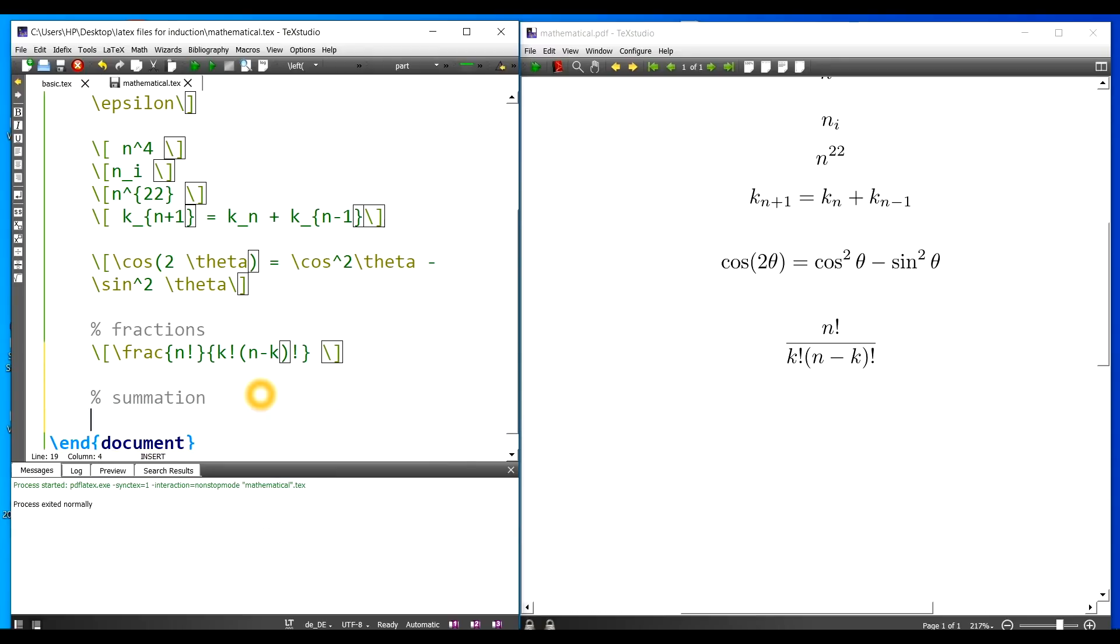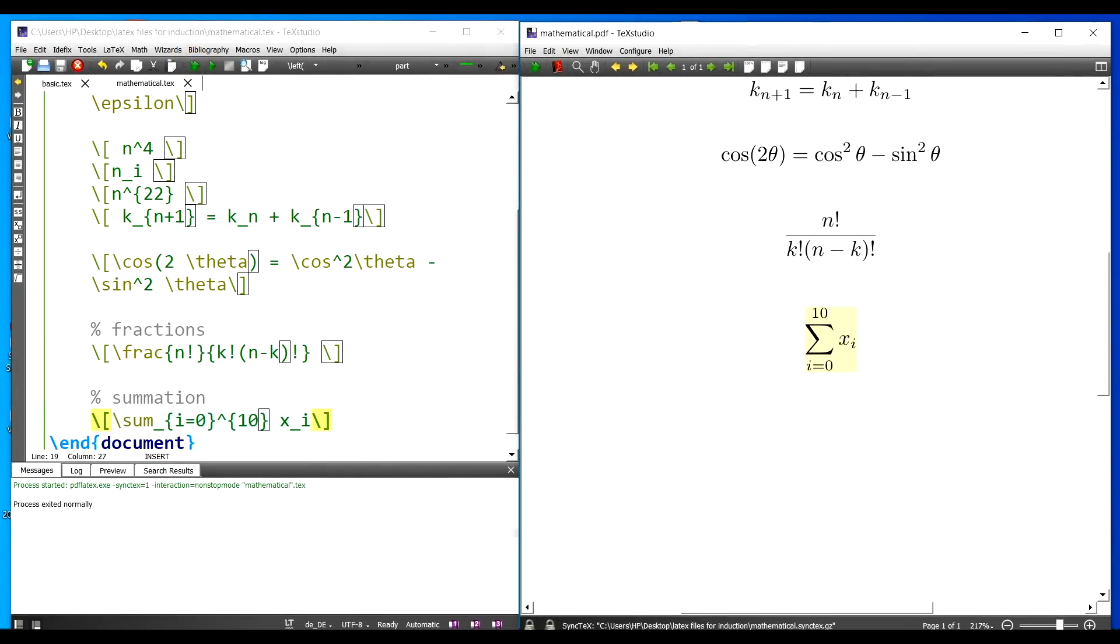Let me take summation. In case of summation our command is slash sum. Summation has the limits. Let me say sum from underscore i, i is equal to 0 to 2, so that is caret. Let me write 10. Let me write x sum i. This has to come in mathematical mode. Let's execute it and you can see proper summation with spacing alignment, x sub i. That is for summation.